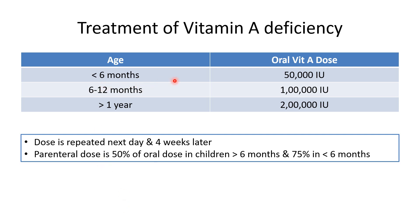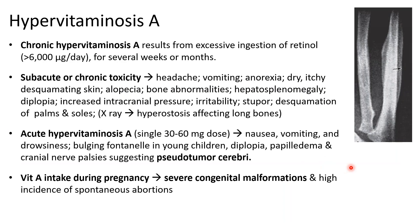For prophylaxis, a single dose every six months is given. For treatment of an active deficiency, the dose is repeated after 24 hours and again after four weeks. If oral vitamin A cannot be given, the parenteral dose is 50% of the oral dose in children over 6 months and 75% in those under 6 months.